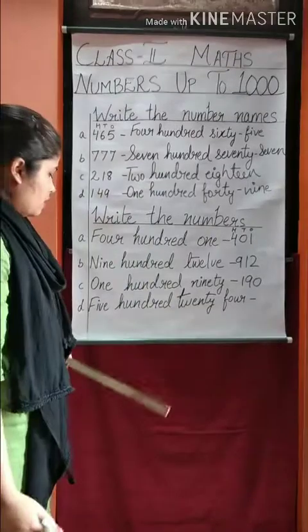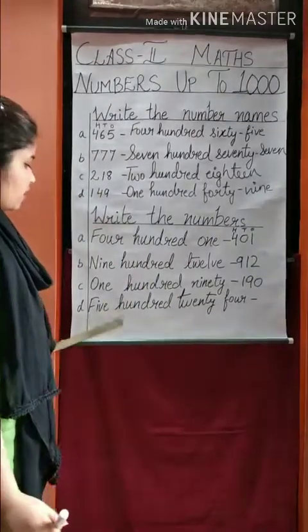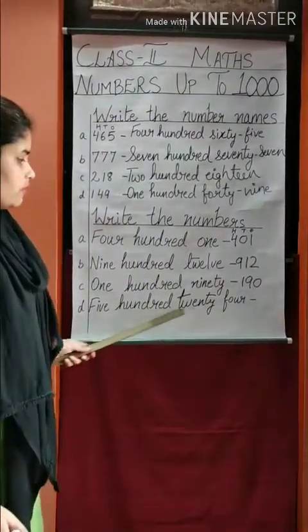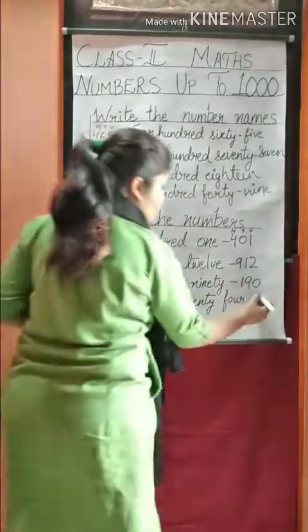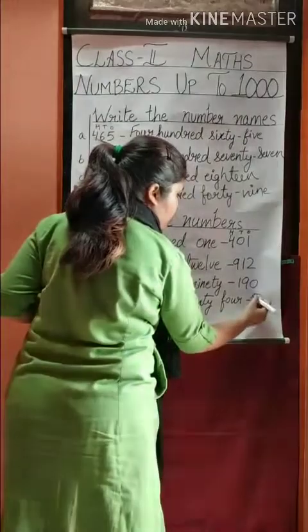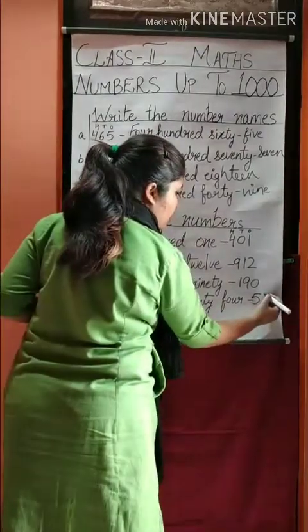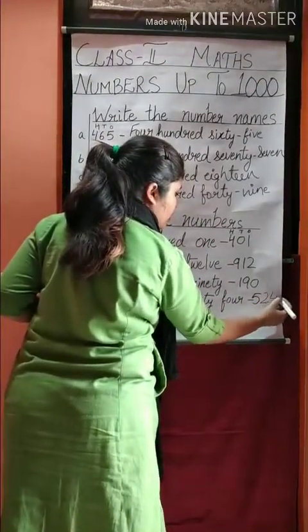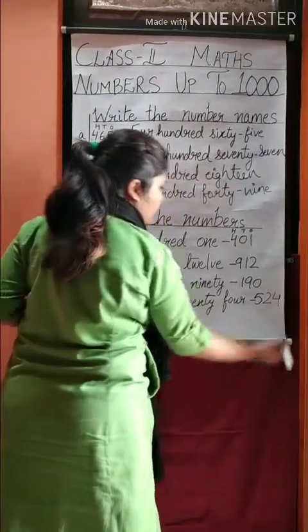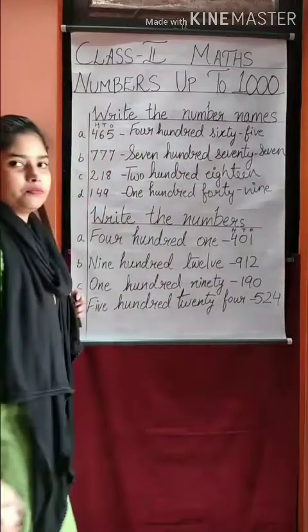The last one is five hundred twenty-four. So we write 5, 100, 20, 4 — five hundred twenty-four.